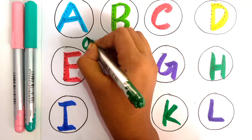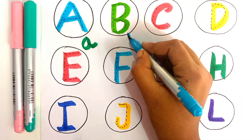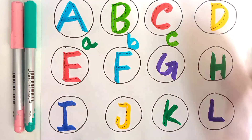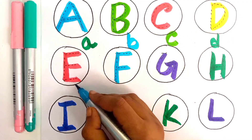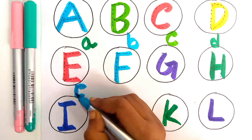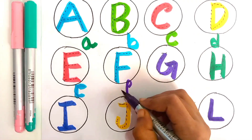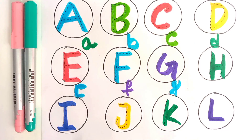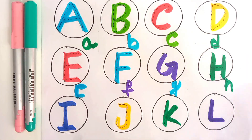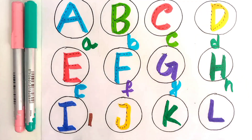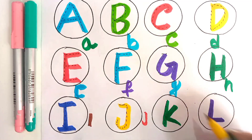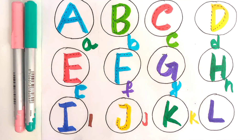Green color, A. Sky blue color, B. Green color, C. Green color, D. Dark green color, D. Sky blue color, E. Purple color, F. Sky blue color, G. H. Green color, H. I. Coffee color, I. J. Red color, J. Yellow color, K. Blue color, L.